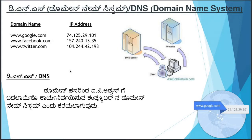When you type in Google, your request goes to a DNS server. You can type in the IP address or the website name. You type in the domain name into the DNS server, and it returns the IP address. If you want to use the domain, you can use the DNS entry list.